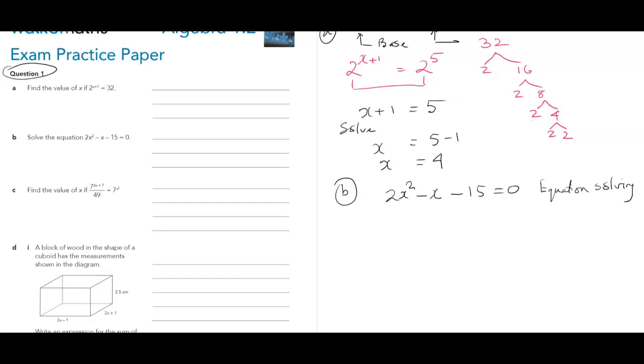So first thing, check for common factor. Doesn't have a common factor. Number 2, is it already factorized? No. These are the questions you always ask. Then factorize when a is not equal to 1. So step one, factorizing.